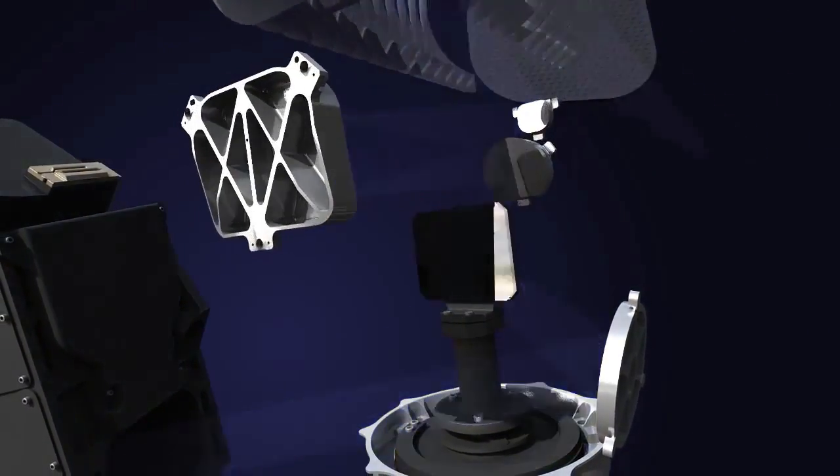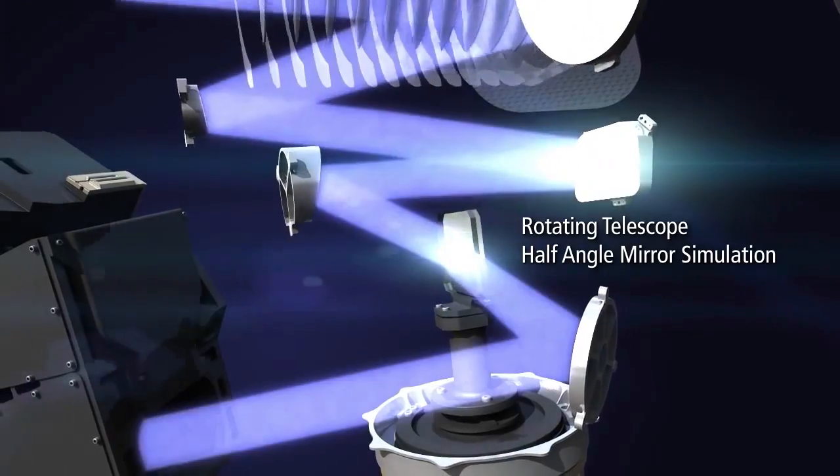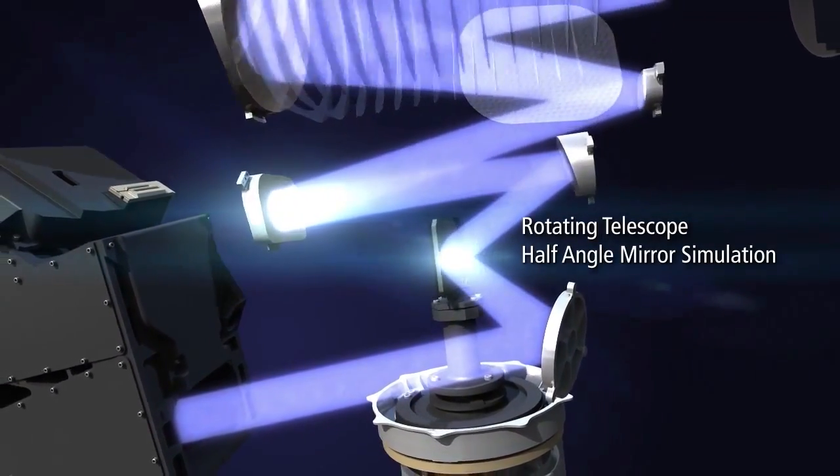As the telescope rotates, the half-angle mirror turns at one-half the rate. Both sides of the mirror are used to make sure that all collected light is directed to the detector arrays.